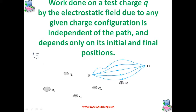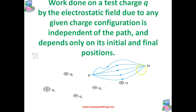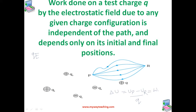Work done by external force in bringing a unit positive charge from point r to point p, as seen in this figure, is given by ΔU = (U_p − U_r) / q, which is equal to W_rp / q.